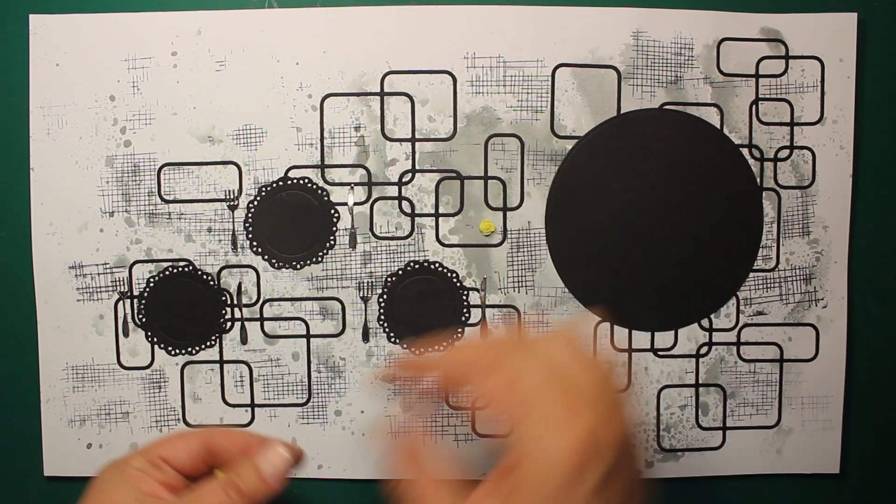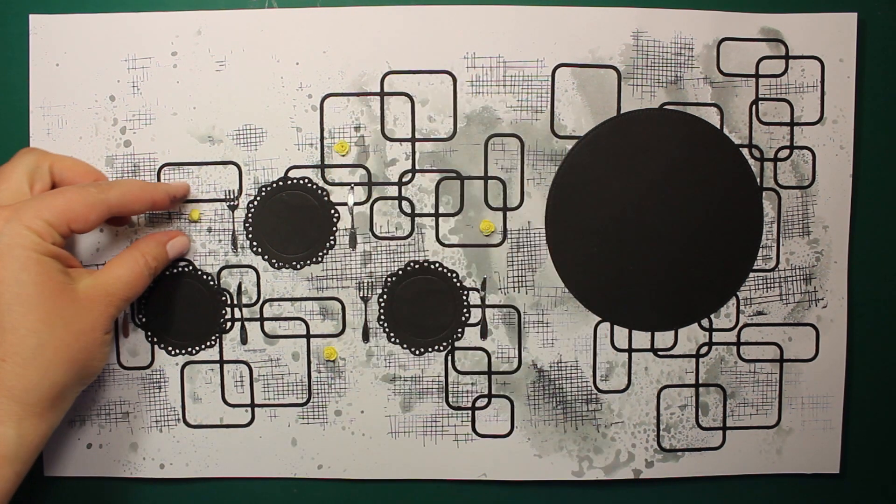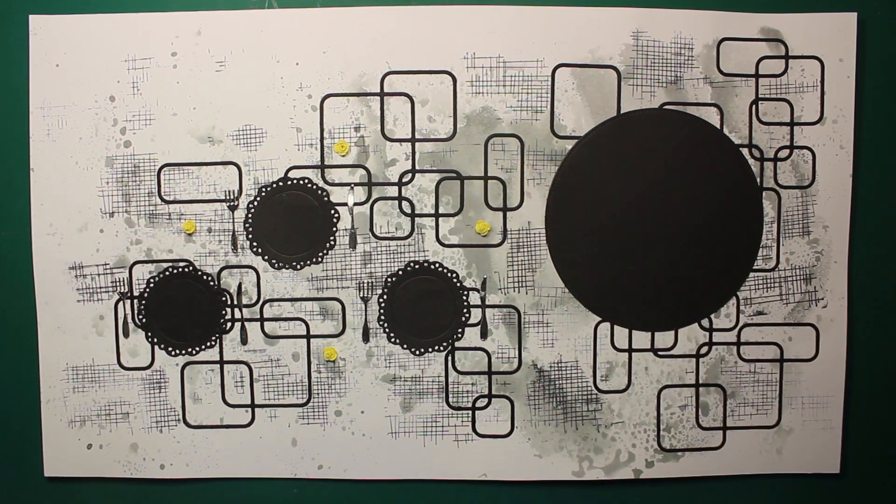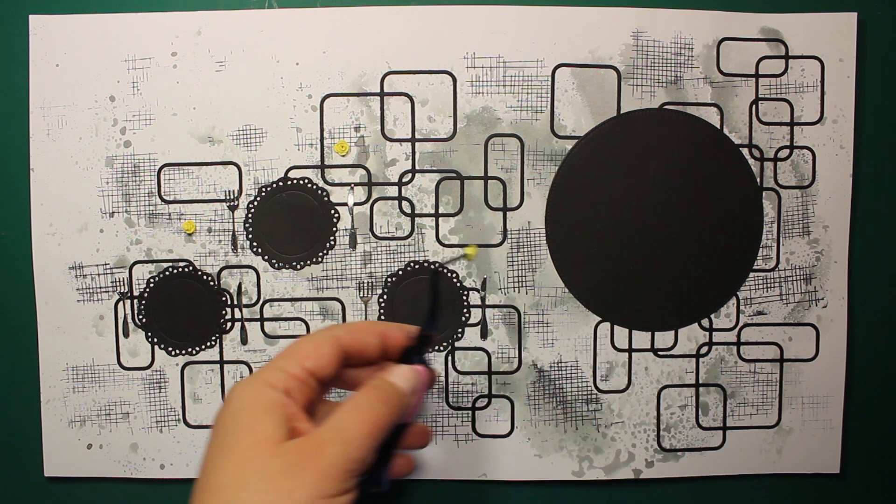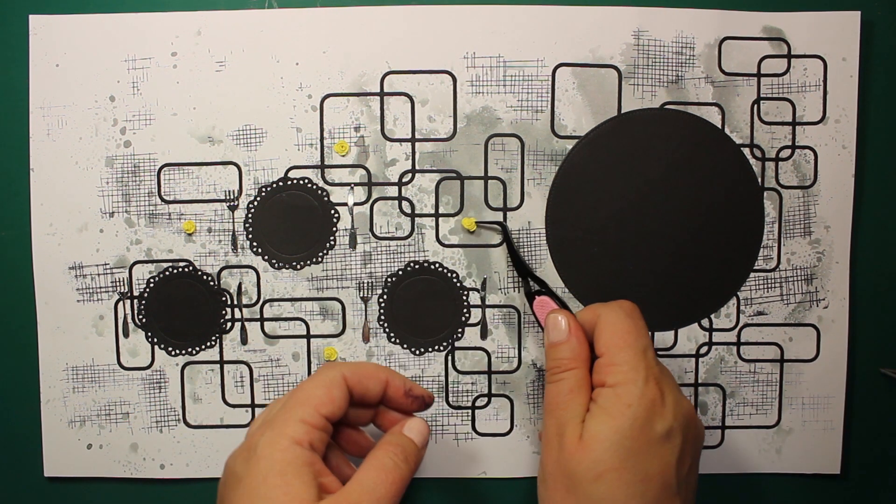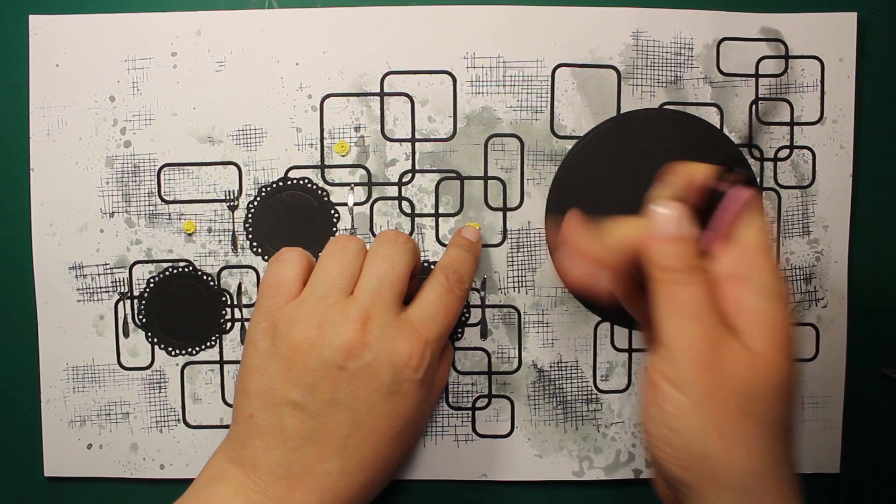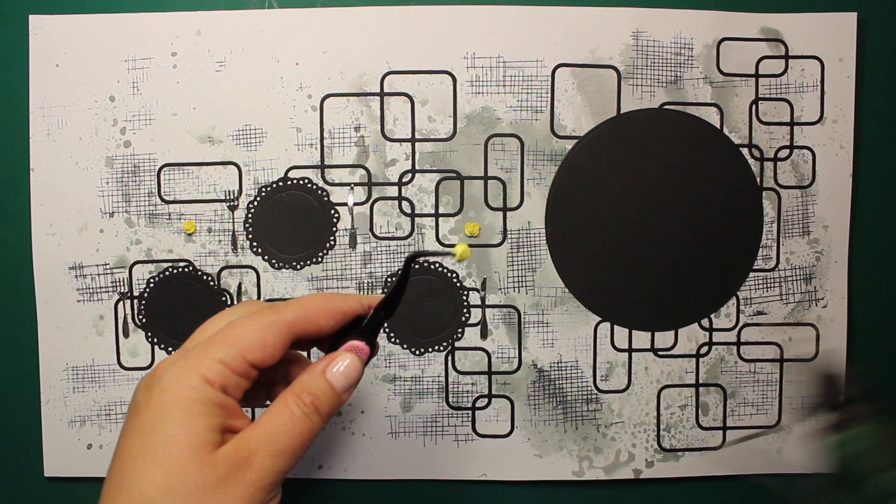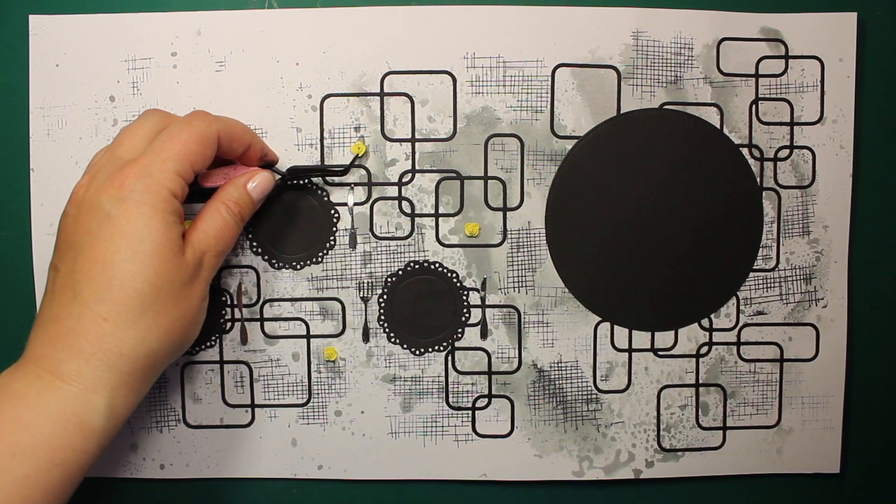Those tiny yellow roses are actually leftovers from one of my previous projects. I'll put a link in the description in case you want to know how to make them. But you can totally use store-bought paper flowers or any other yellow embellishments like buttons, for instance.